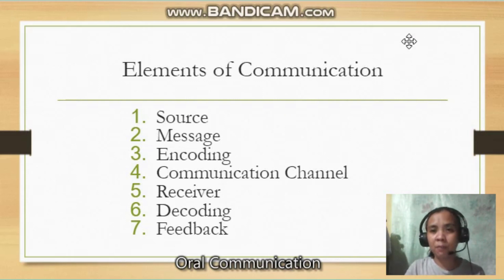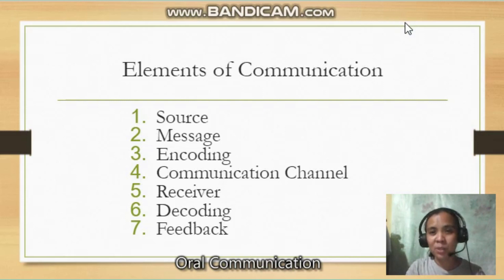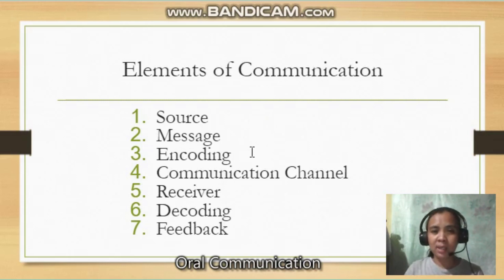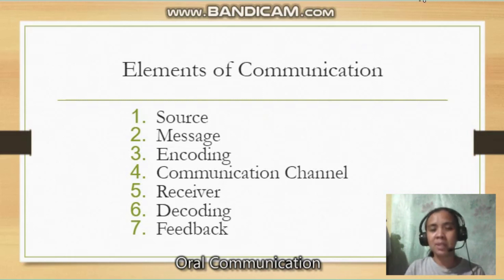From the word itself, source can also be called the sender. The source is the one that transmits the message — the word, action, or expression. The message is what is transmitted from the source to the receiver; it could be words, actions, or expressions. For encoding, the keyword is "how" — this is how the message is transmitted from the source to the receiver, how the word, action, or expression is conveyed from the sender to the receiver.